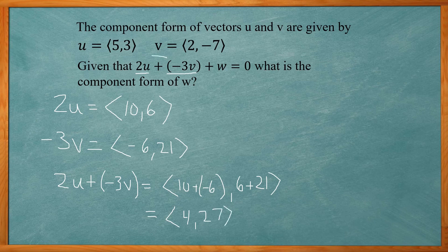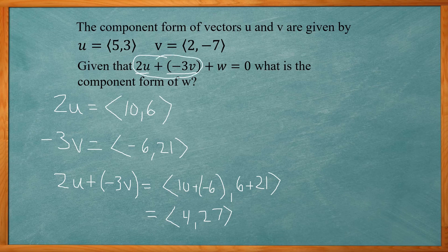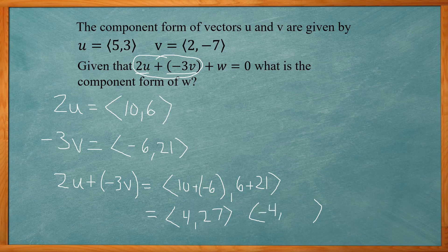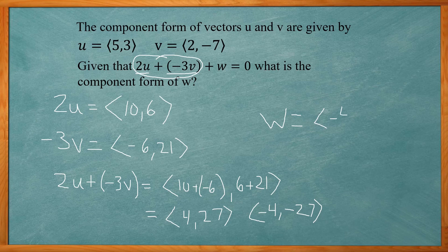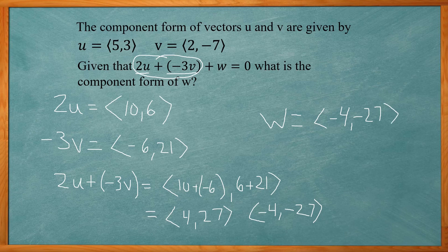Now that result plus W has to give me 0. So if I had to add that result (4, 27) plus W, in order for that to equal 0, each term has to add up to 0. So 4 and negative 4 would add up to 0, and 27 and negative 27 would add up to 0. So W would have to be (-4, -27). That would be the component form of vector W.